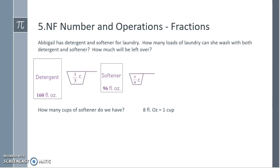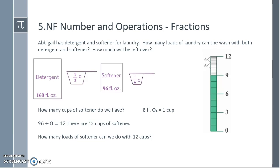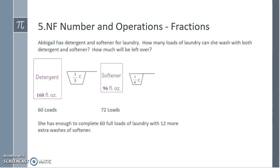We now need to determine how much softener we have. There's 8 fluid ounces in 1 cup. So 96 divided by 8 is 12. So there are 12 cups of softener. So we need to know how many loads of softener can we do with 12 cups if each load takes 1 sixth of a cup. There are 6 1 sixth cups in each full cup. So if we have 12 of them, we will be able to do 72 loads of laundry. So the detergent we are able to do 60 loads and the softener we are able to do 72 loads. So she has enough to complete 60 full loads of laundry with 12 more extra washes with the softener.